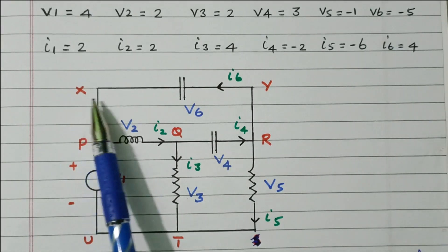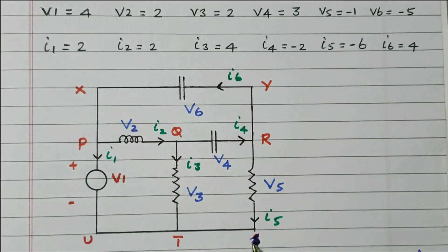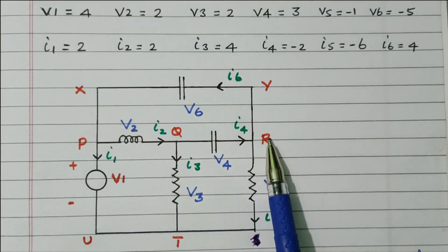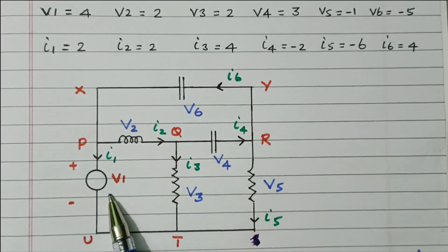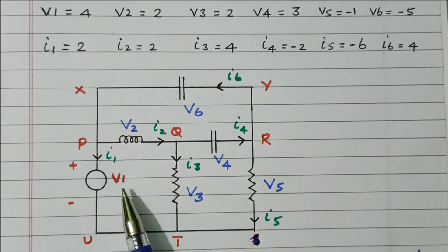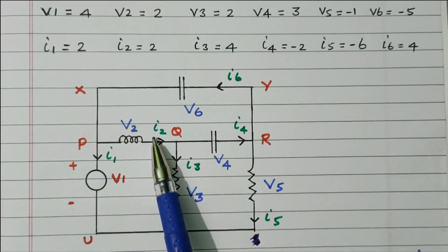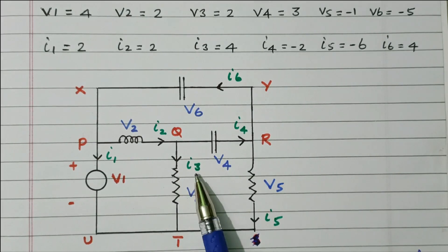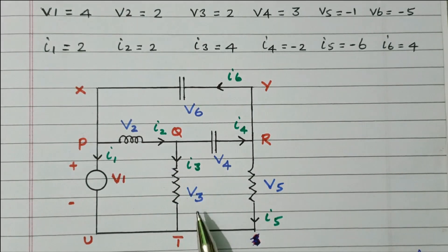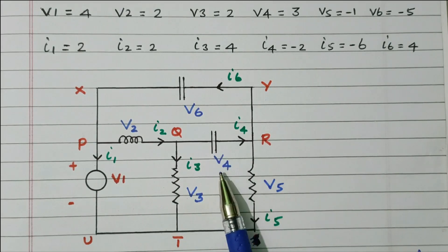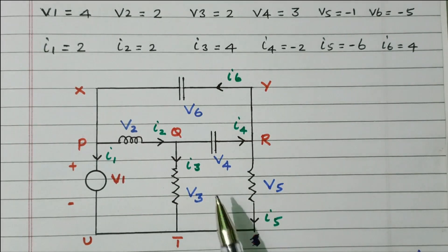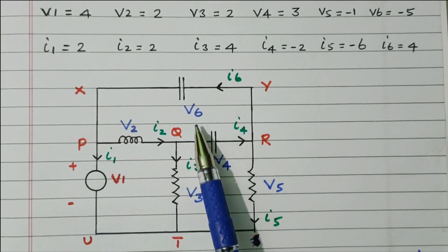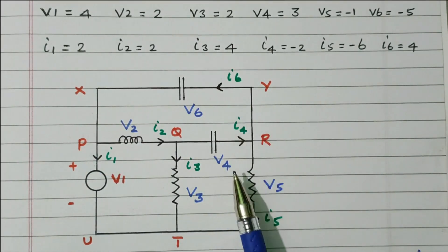The nodes are labeled PQRTU, and the terminals XY are also identified — both terminals at that junction are the same. The source voltage is V1 with current I1. The inductor branch has voltage V2, current I2. Branch QT has current I3, voltage V3. Branch QR has a capacitor with voltage V4, current I4. Branch PT has a resistor with voltage V5, current I5. The XY branch has a capacitor with voltage V6, current I6.